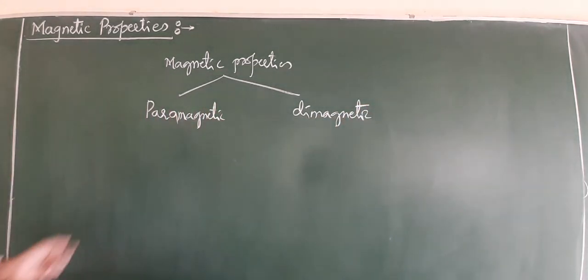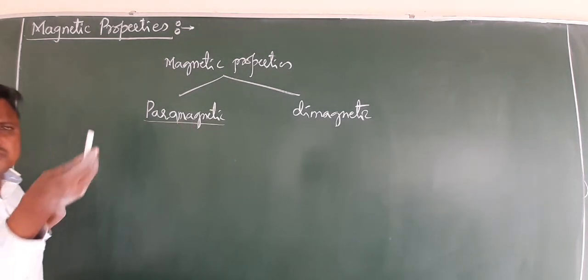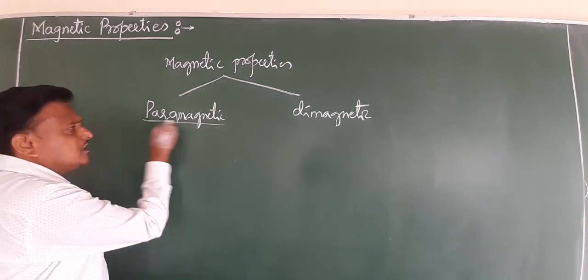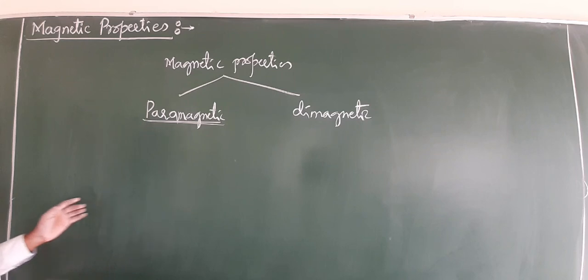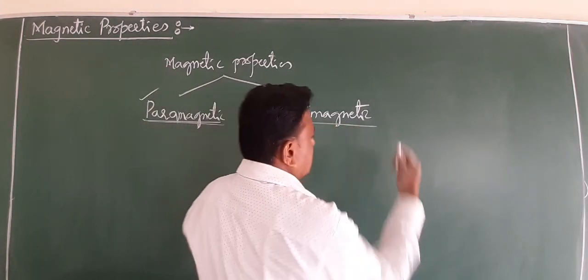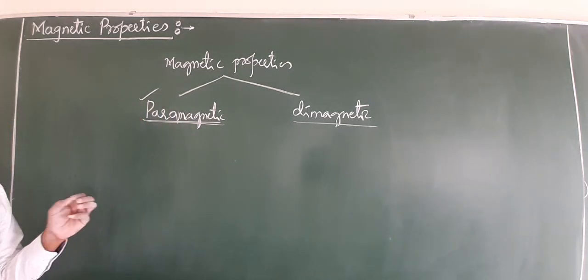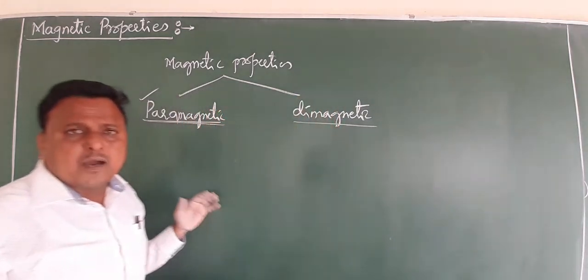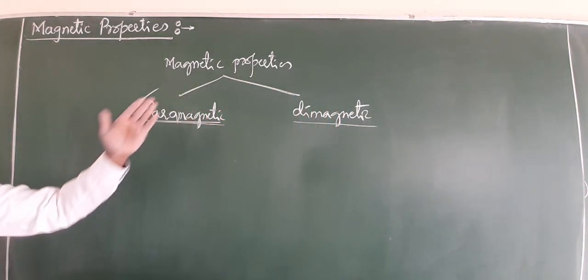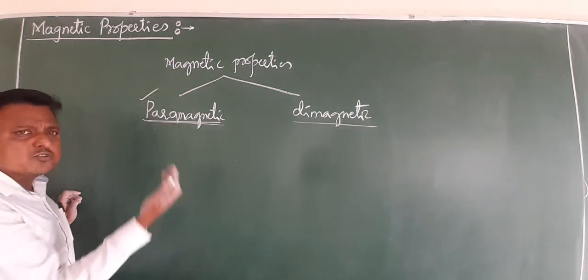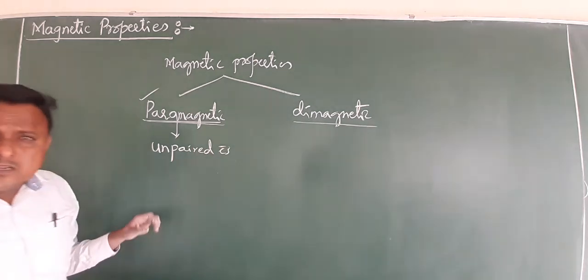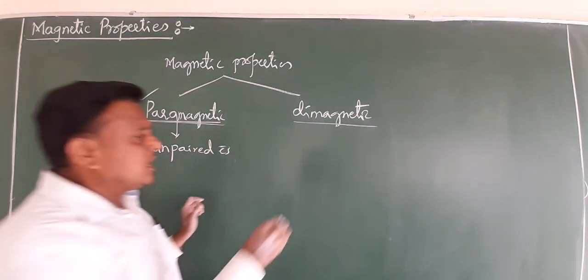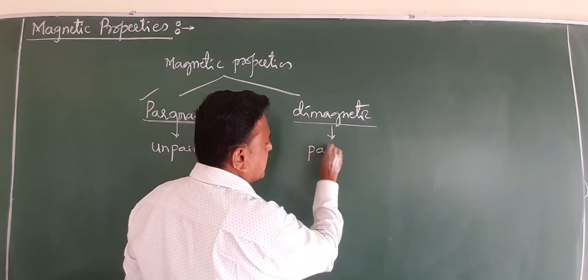What are paramagnetic and diamagnetic materials? If you keep a substance in a magnetic field and it undergoes repulsion, this is known as diamagnetism. If that magnetic field attracts the substance, those are called paramagnets. Why does it undergo repulsion? This repulsion is completely dependent upon the number of unpaired electrons. Paramagnetism is due to unpaired electrons, and diamagnetism is due to paired electrons.